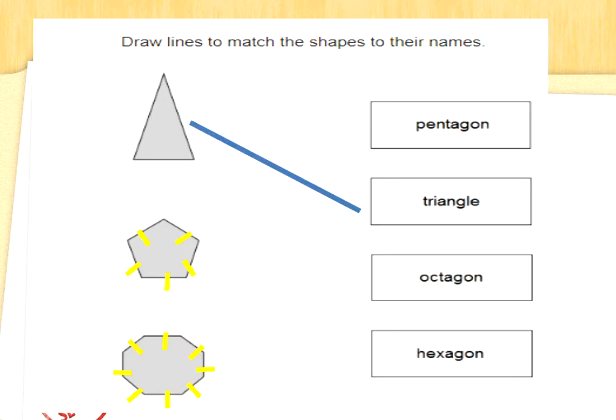Well done. Now let's count the sides of the middle shape together. Remember we can put a line through each side to make sure we've counted them: one, two, three, four, five. That is a five-sided shape. Can you remember the name of a five-sided shape? Is that a pentagon, an octagon or a hexagon? I remember hexagon with the number six, so I know it's not a hexagon. It's a pentagon.